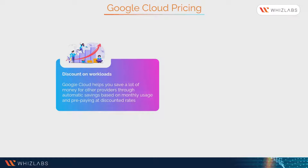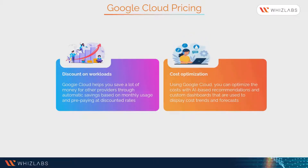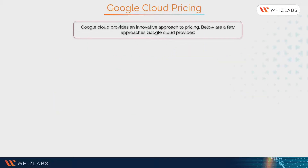For example, you can save up to 57% with committed use discounts on Compute Engine resources like machine types or GPUs. Using Google Cloud, you can optimize cost with AI-based recommendations and custom dashboards that display cost trends and forecasts. Google Cloud offers pricing based on four core principles.